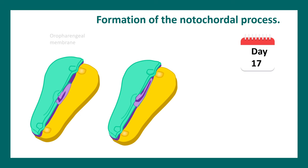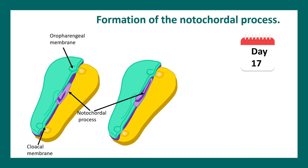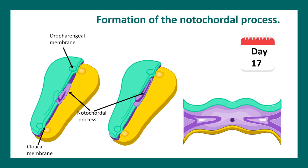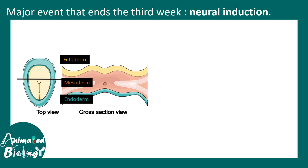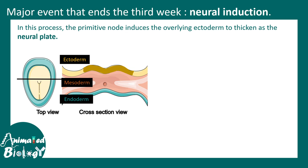Entering the early stage of day 17, within the mesoderm tissue there is formation of the notochordal process. To orient: the oropharyngeal membrane is at the cranial end, and the cloacal membrane marks the caudal end. The embryo is more bulky on the cranial side and tapers on the caudal side. The notochordal process grows to form the notochord, which first gives rise to the vertebrae and secretes molecules that trigger induction of the neural plate. Neural induction is a key event at the end of the third week.